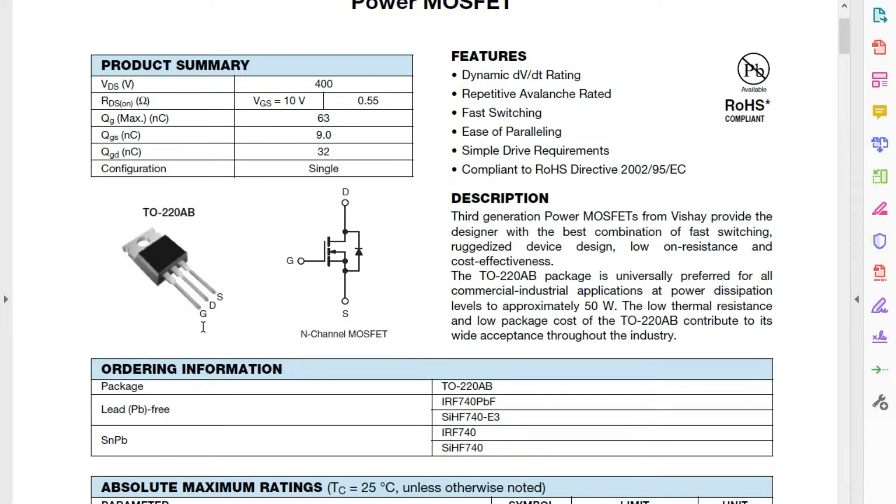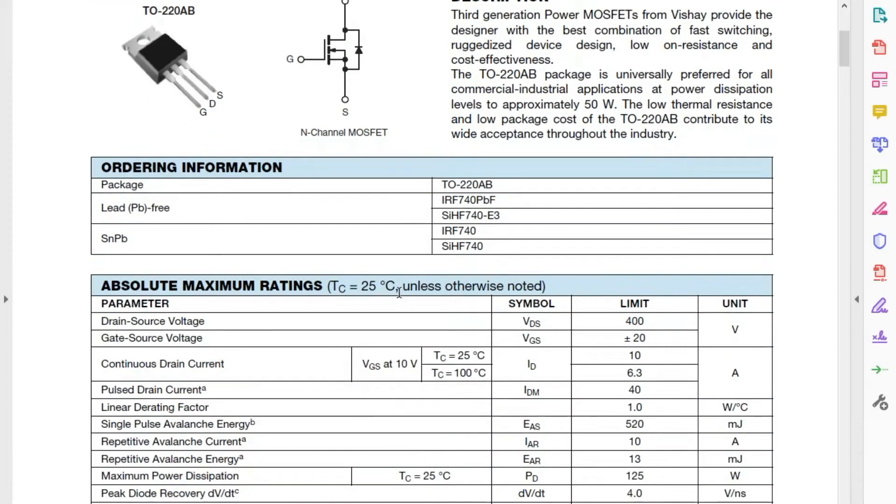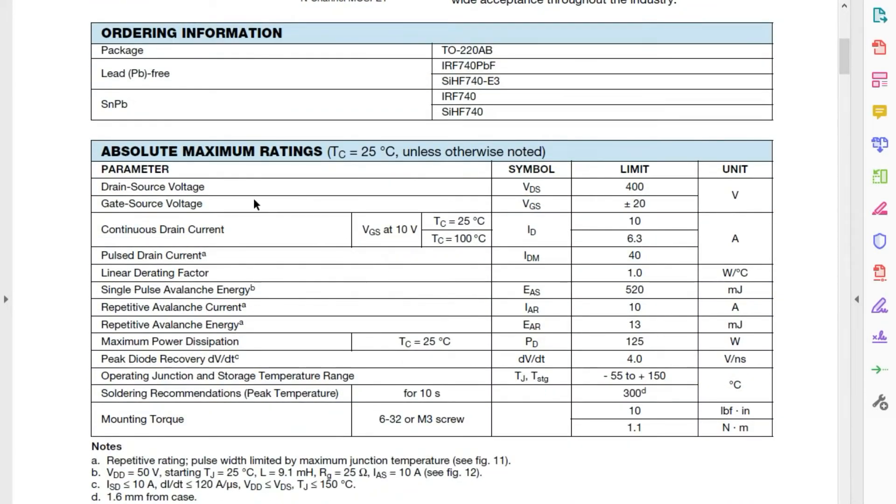Quick circuit diagram there. Gate pin out. I wonder what the current rating for this is. Drain source voltage 400. Gate source voltage 20 volts. Continuous drain current at room temperature 10 amps. Also when it gets a bit warmer at 100 degrees centigrade 6.3 amps. That's still a hell of a lot of current. Pulse drain current 40 amps.